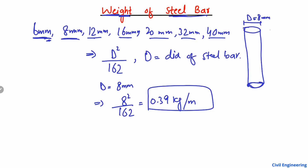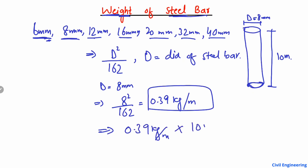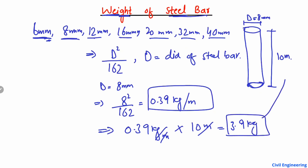Now if our bar length is, for example, 10 meters, what will be the total weight of the bar? We will just multiply 0.39 kg per meter by 10 meters — the meter units cancel — and we get 3.9 kg. So 3.9 kg is the total weight of the 10 meter bar.